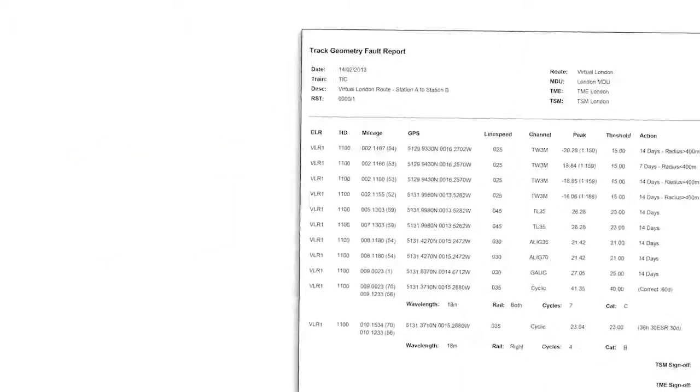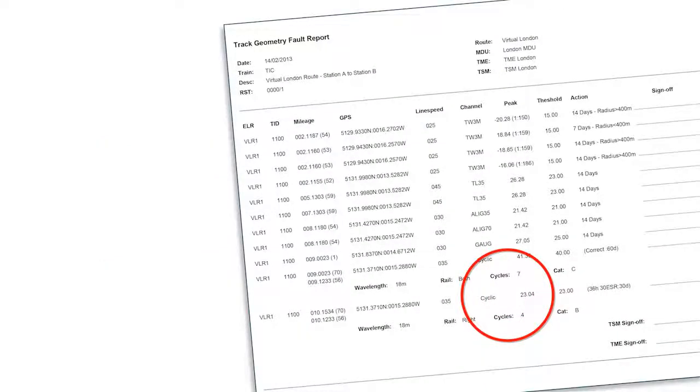On the fault report, cyclic top will be reported with the number of cycles. The number of cycles reported is the number of dips at the specified wavelength beyond the trigger.